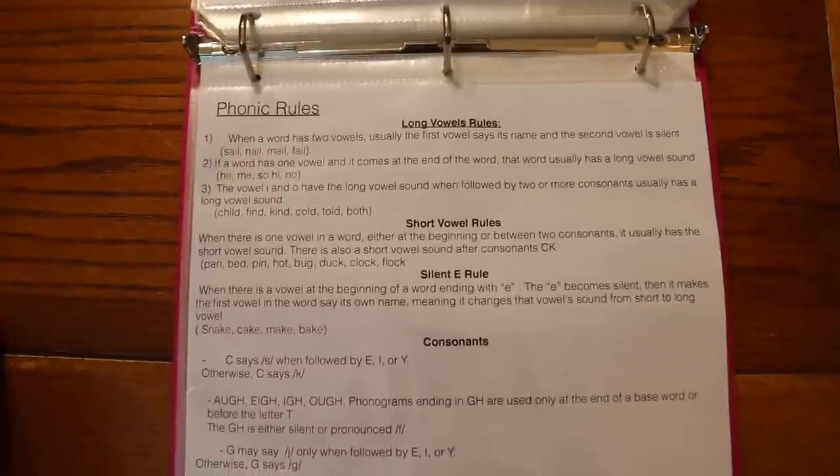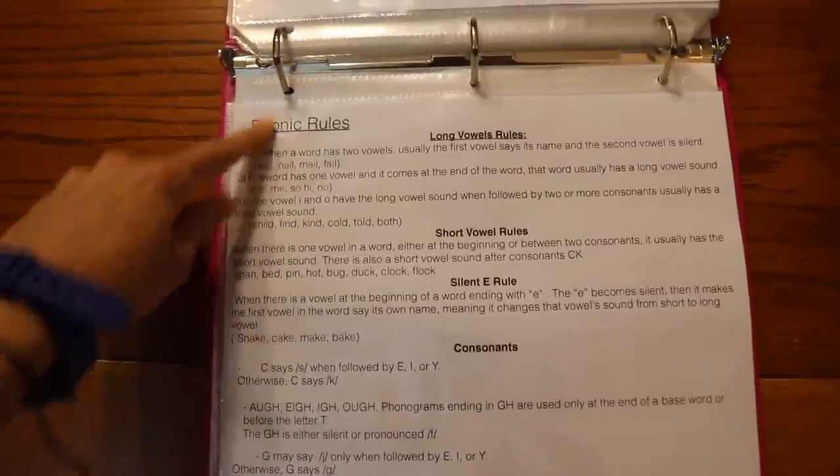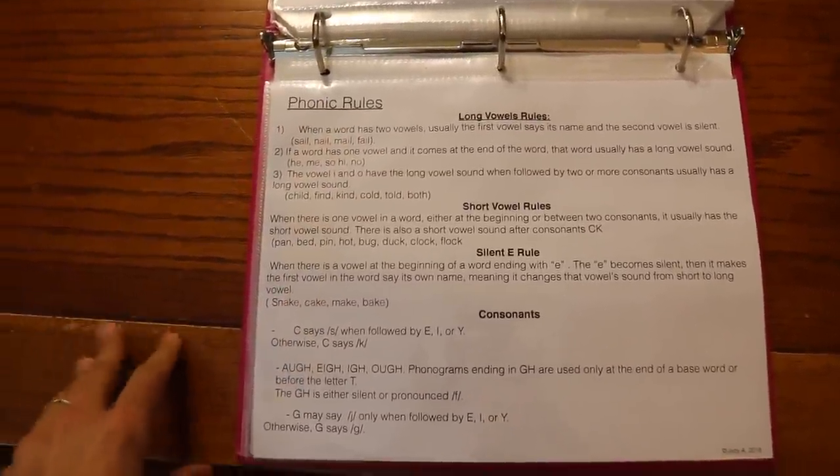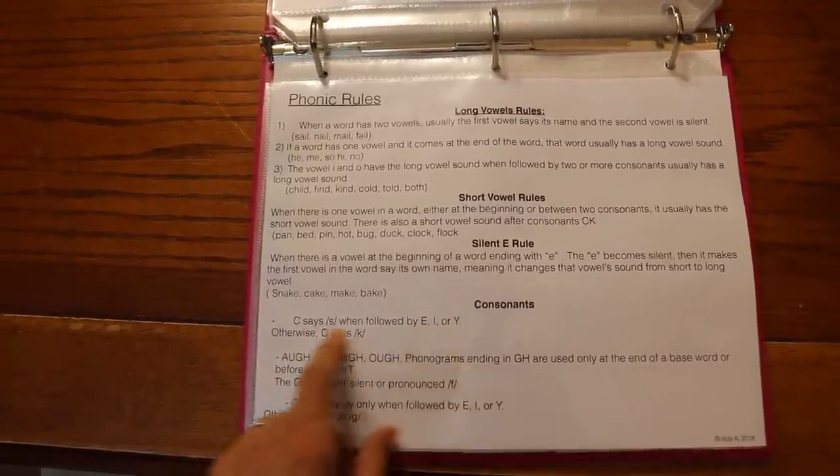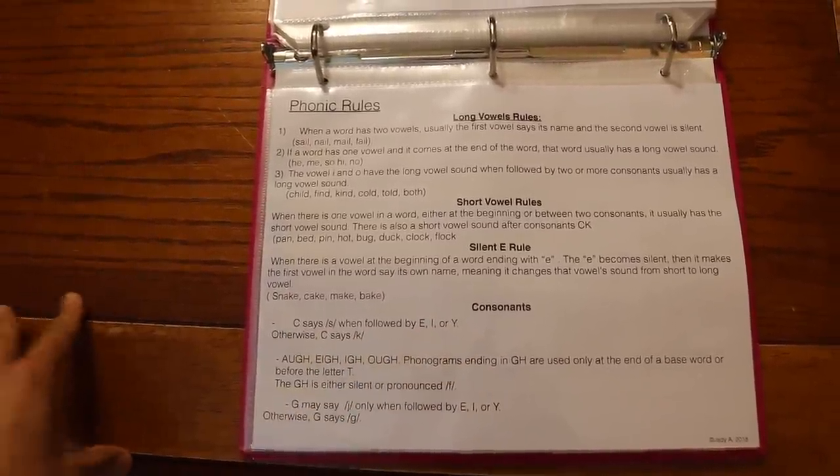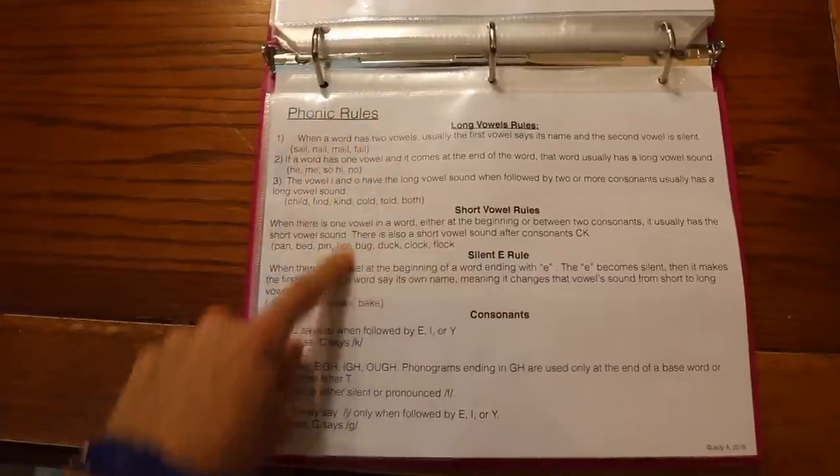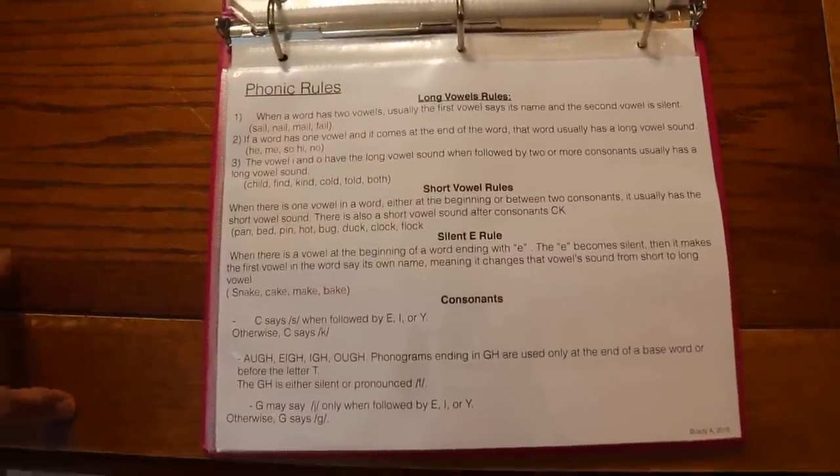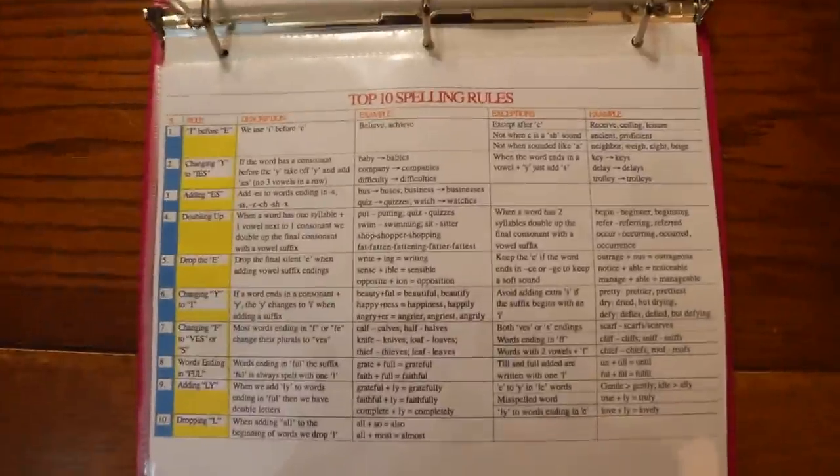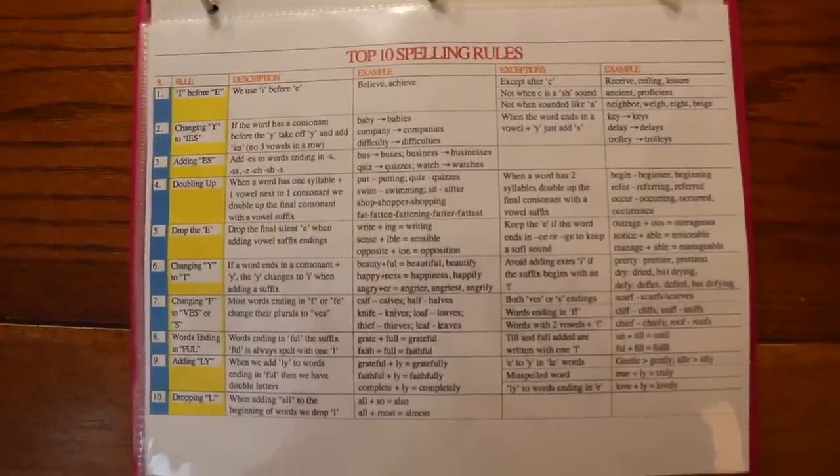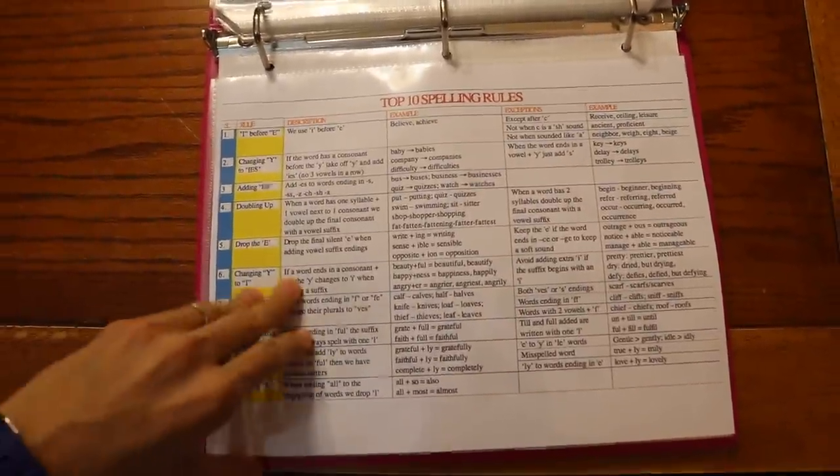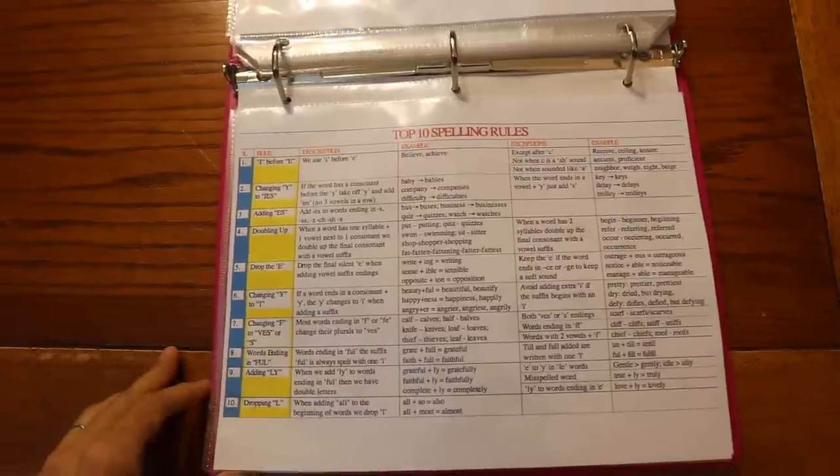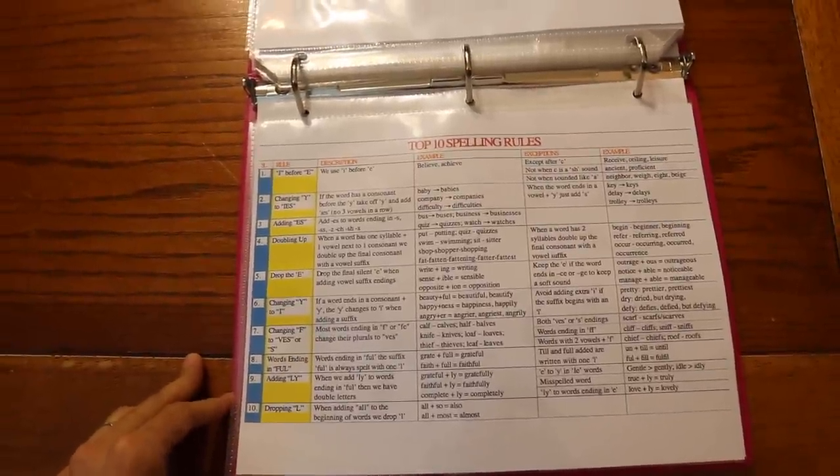Here are just regular phonics rules, just like really basic things like the silent E rule, or like C: when you put an E or an I or a Y in front of a C it makes the S sound, otherwise it's K. Just a few phonics rules here that I have here for her. And then over here is the top 10 spelling rules. So this is a good little chart. It's kind of hard to zoom in, but I will have all of these resources available for you for free to download.